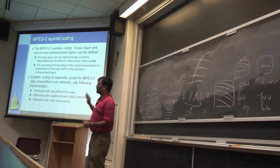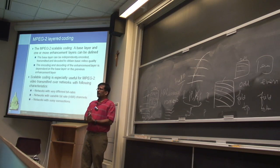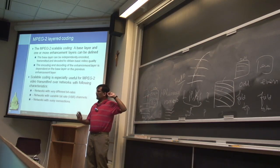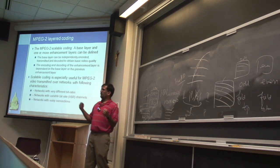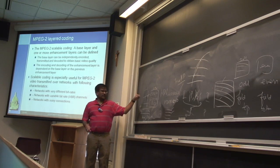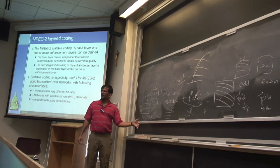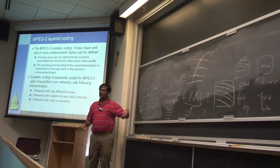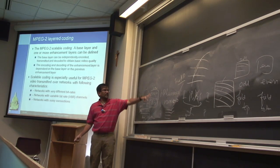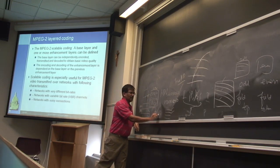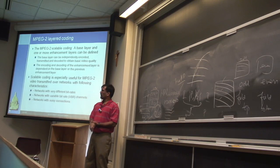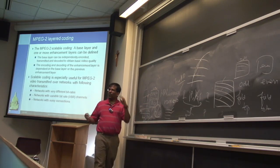Multiple descriptor coding — not in the textbook, but we'll see it later — is more like a RAID erasure coding system. The key difference from layered coding is that all descriptors are completely independent. If you have 10 descriptors and receive any two of them, you get two-tenths quality. It doesn't matter which two — any subset gives you proportional quality, with no hierarchy required.